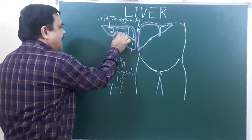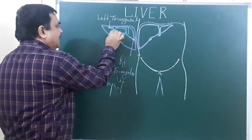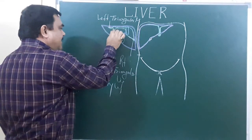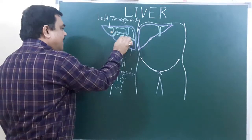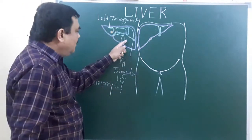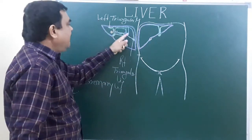This is porta hepatis. This is the fissure for ligamentum venosum. Here is the fossa for the gallbladder, so peritoneum is reflected at this area.